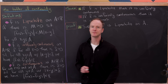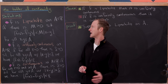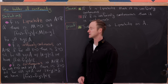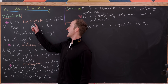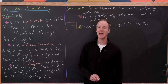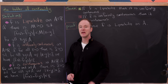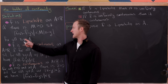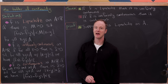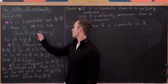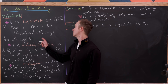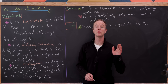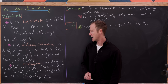The first is so-called Lipschitz continuity — we'll say that f is Lipschitz if it's Lipschitz continuous. We'll say f is Lipschitz on a subset A of the real numbers if we can find a positive number m such that the absolute value of f(x) minus f(y) is less than or equal to m times the absolute value of x minus y, for all x and y in A.